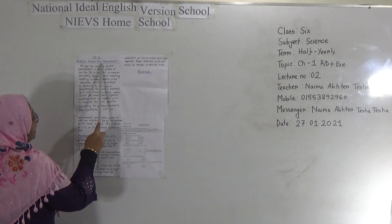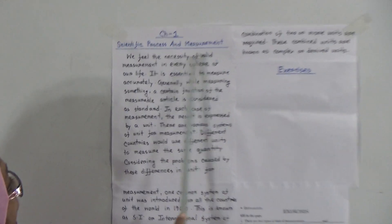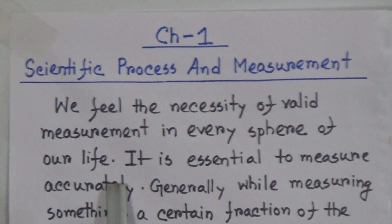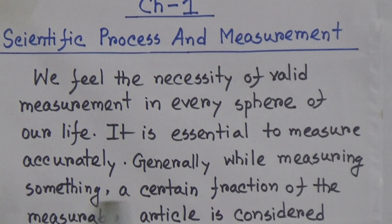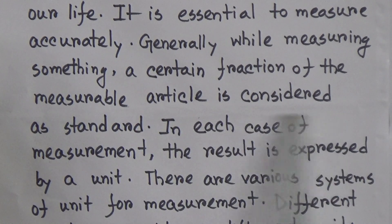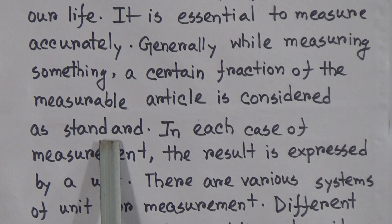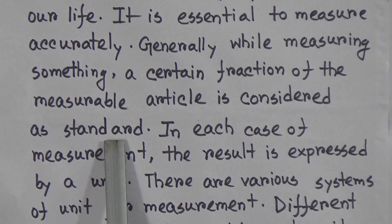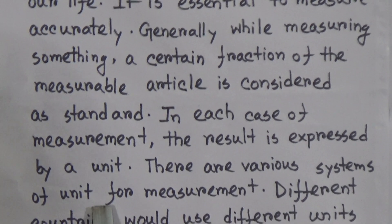The chapter name is Scientific Process and Measurement. We feel the necessity of valid measurement in every sphere of our life. It is essential to measure accurately. Generally, while measuring something, a certain fraction of the measurable article is considered as standard. When you want to measure the length of any substance, at first you have to consider anything as standard. In each case of measurement, the result is expressed by a unit. There are various systems of unit for measurement.